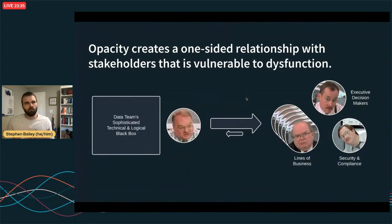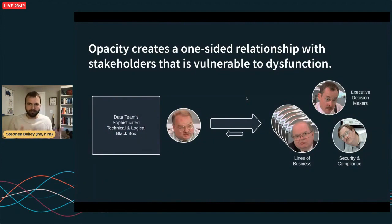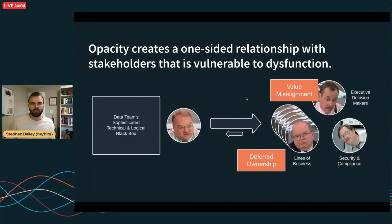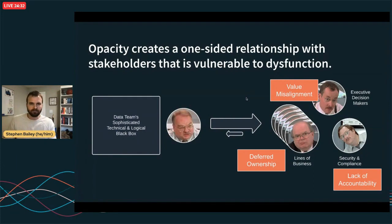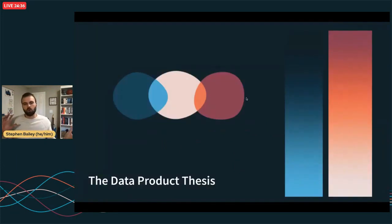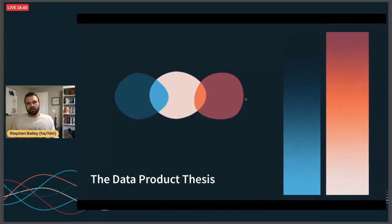It creates an opaque layer between what the data team does and the value the business needs to get out of data. That opacity manifests in a one-sided relationship with stakeholders, vulnerable to dysfunction. Our tool gets bigger and more sophisticated over time, but it's easy for there to be a misalignment on the value of what's being built, who owns it, and whether it meets the necessary standards of accountability. There's a gap, and one fundamental reason for it is an inability to communicate — there's no shared concept between professionals and the business. Fortunately, the community is starting to orient around an answer: the data product.